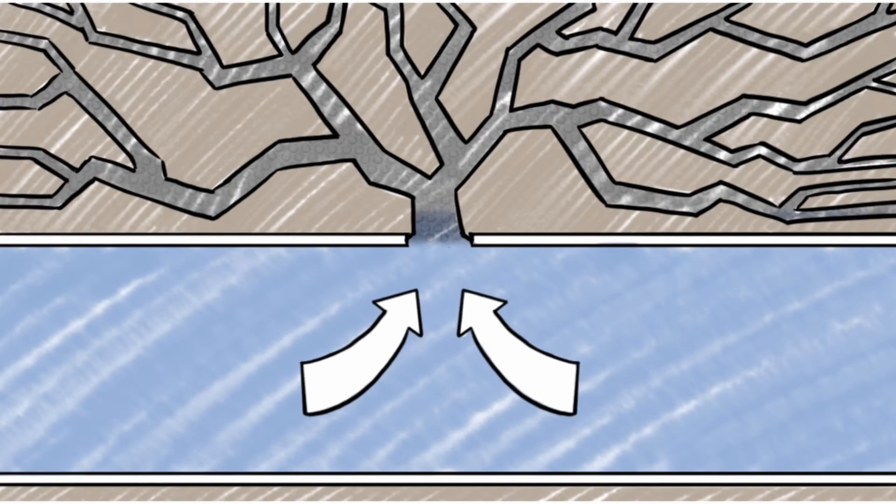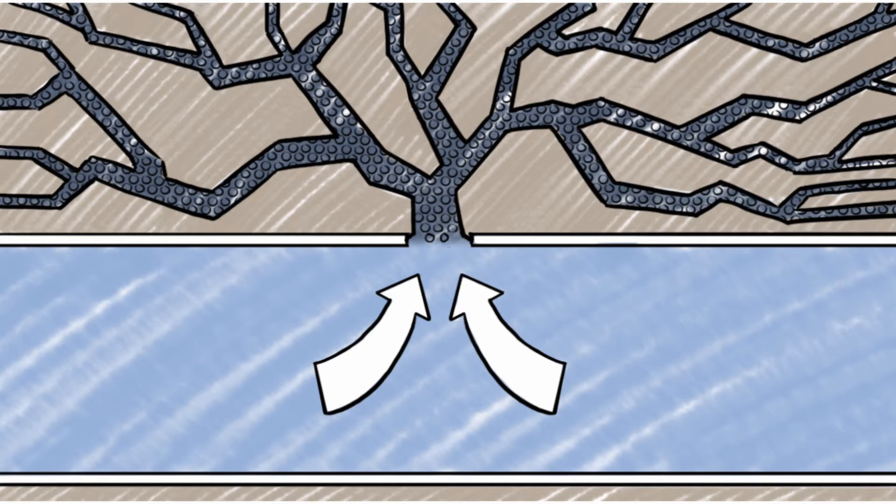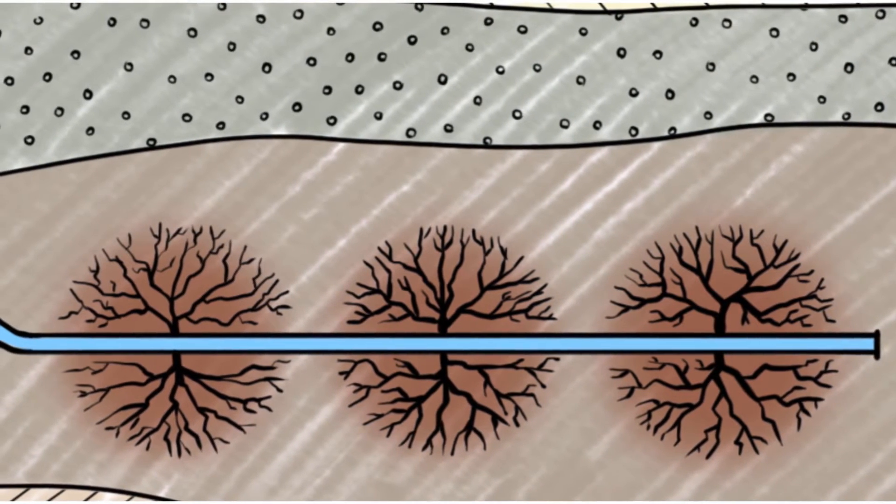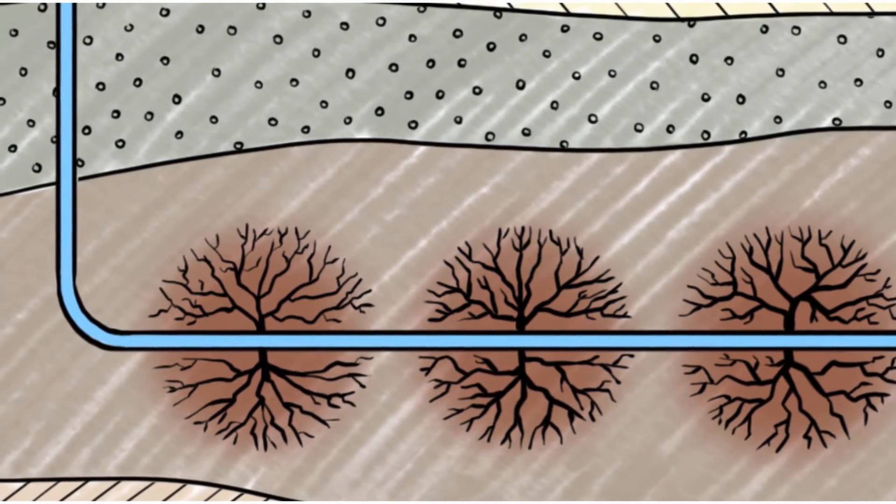The fluids usually have a propant, like sand, that helps keep the cracks open to allow the oil and gas to flow to the well. The fracturing that takes place at multiple locations along the horizontal wells is called multi-stage fracturing.